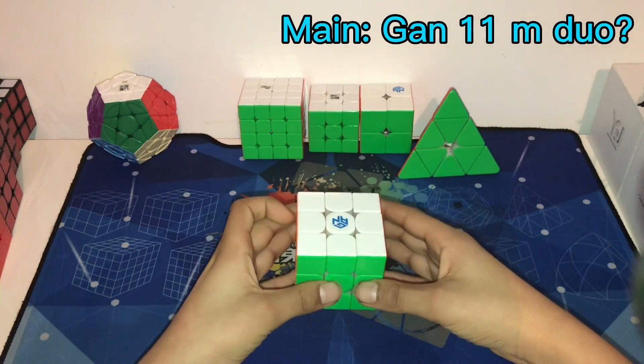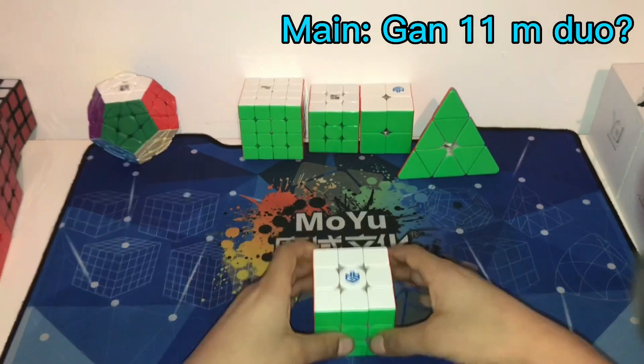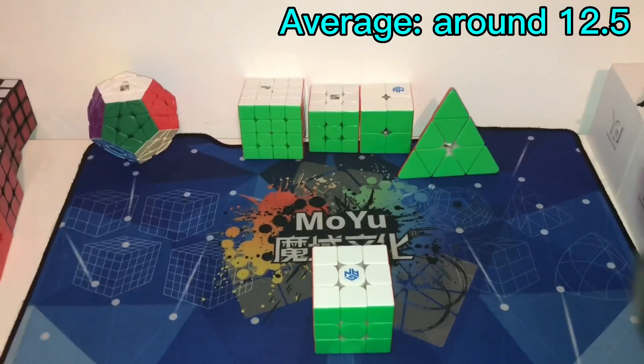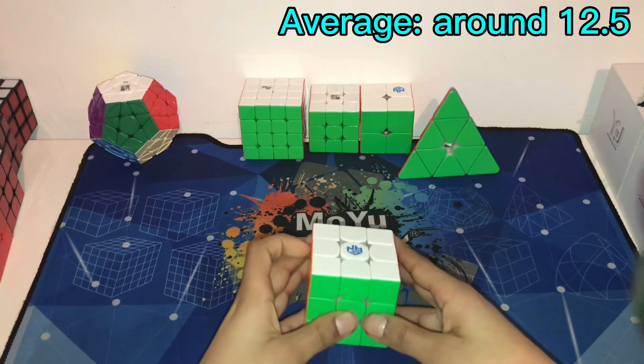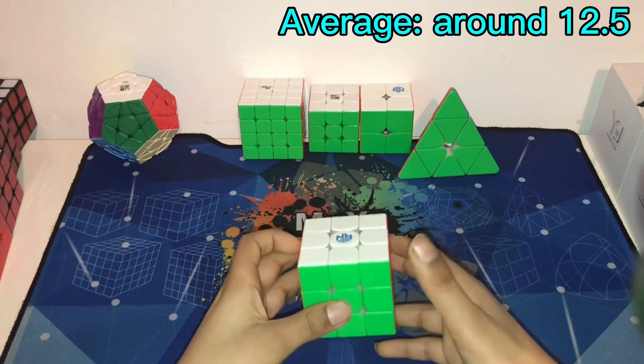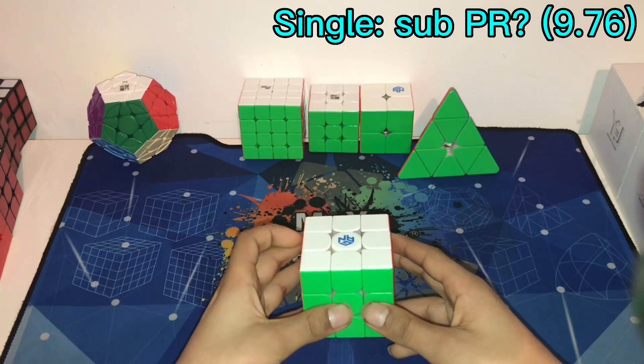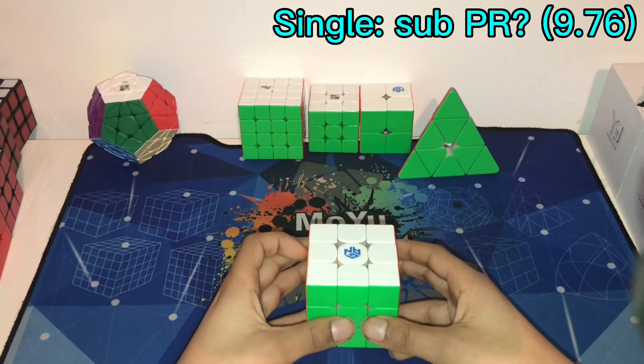And finally, 3x3. I'm gonna main the Gan 11 I'm due, but if I'm feeling different on the day, I might switch to one of these cubes instead. For average, I already have a pretty amazing one in comp, 11.49, so I just aim for all my averages to be around 12.5 or under it. For single, it would be really cool if I could break my PR of 9.76, but if I don't, I don't really care too much as 9.76 is already really good for me.